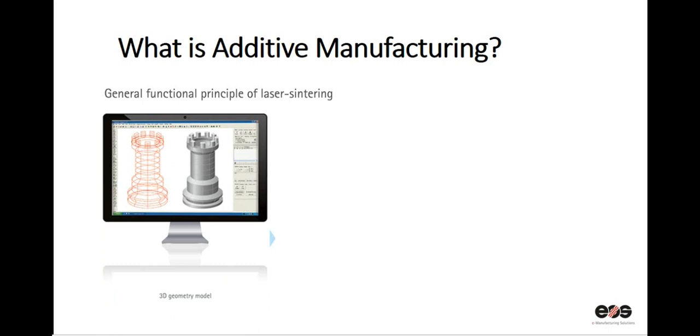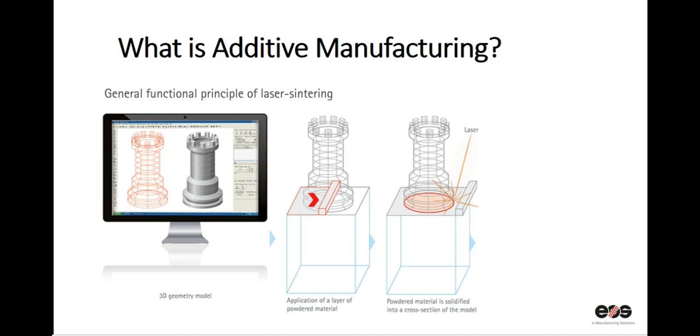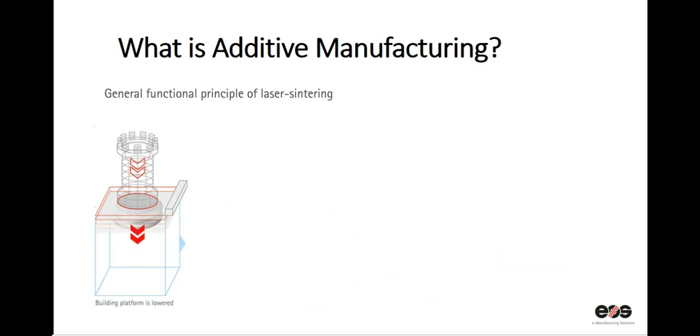Now on the additive manufacturing machine, the powder is uniformly distributed in what we call a powder bed. Then the laser scans the first layer, solidifying the material into a cross section of the model. The powder bed is lowered and a new layer of material is applied. Again, the laser scans the layer according to the cross section of the current layer. The process repeats itself until the part is complete.